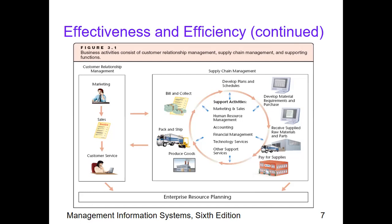We can begin from the supplies: we pay for supplies and receive the supplied raw materials and parts. If purchased on account, the payment comes afterwards. After receipt, we develop material requirements and purchase plans and schedules, then collect receivables from sales. We pack and ship, and of course, produce our goods.